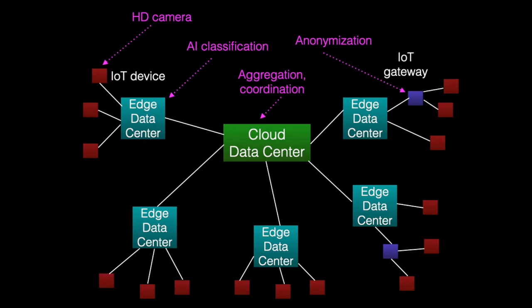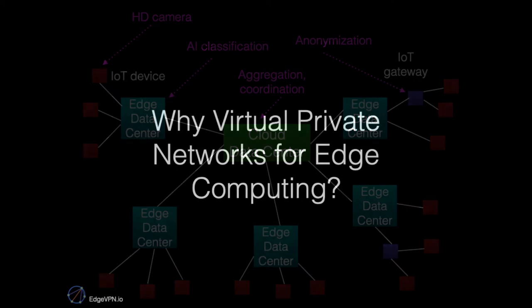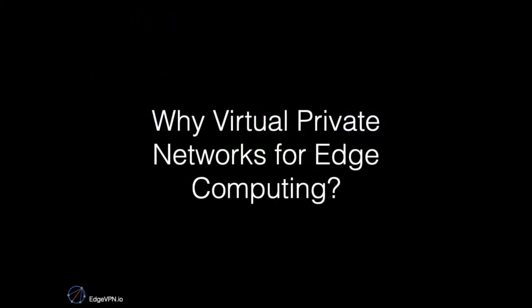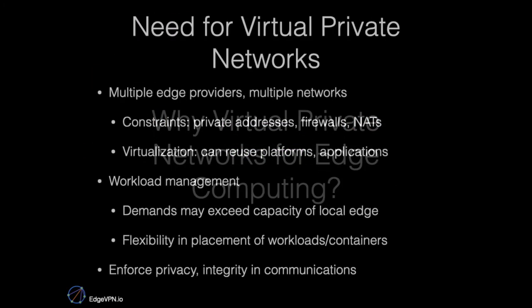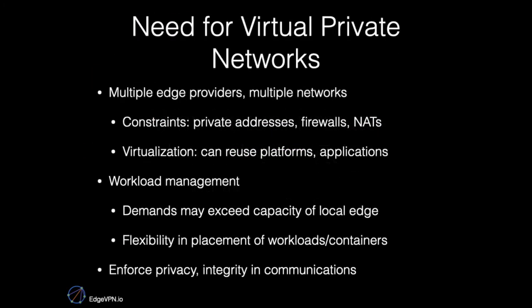You can also anonymize information near the edge. Still, at the cloud, you aggregate information and coordinate your workload. Now, there are many reasons why virtual private networks are useful in edge computing.